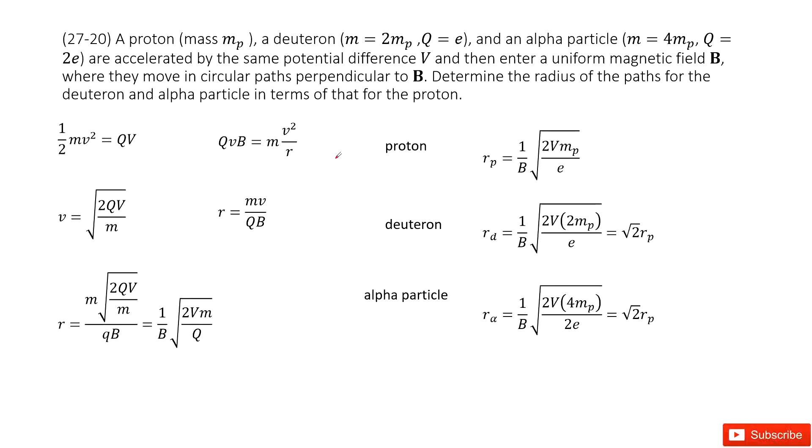So we can see three kinds of charged particles: proton, deuteron, and alpha particles.